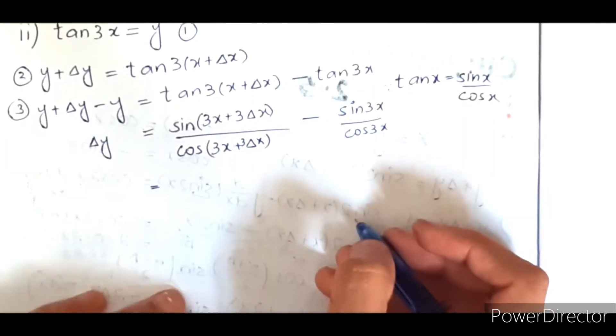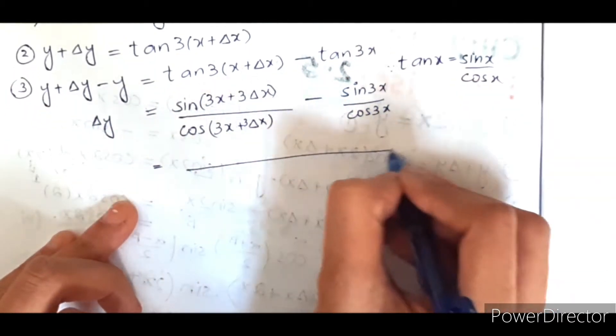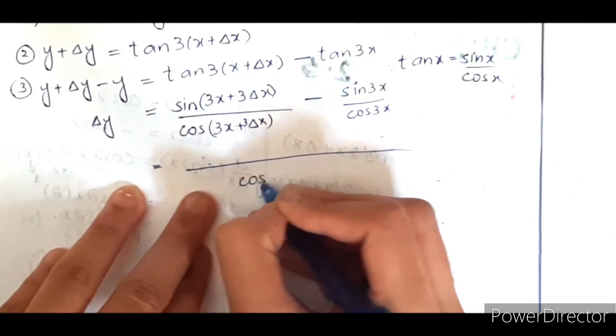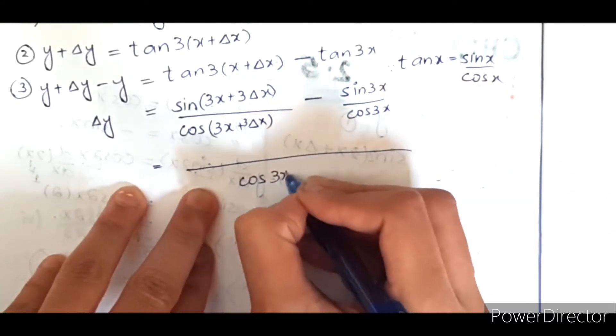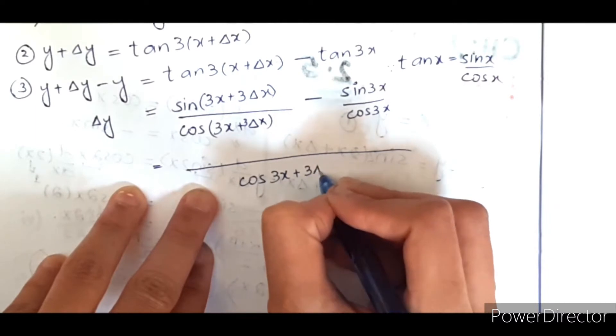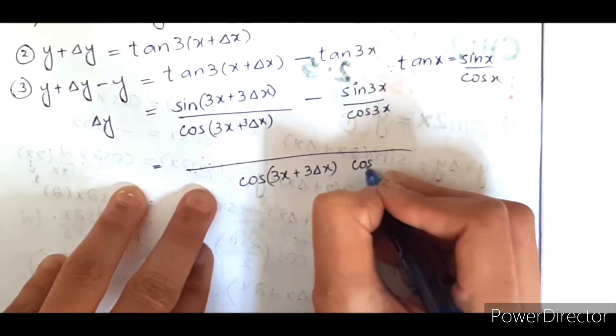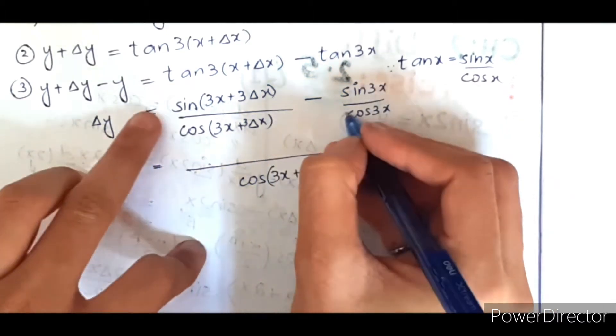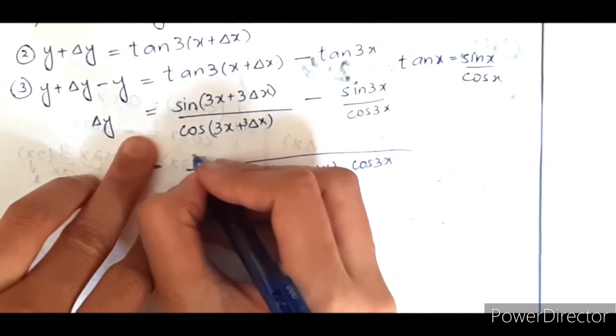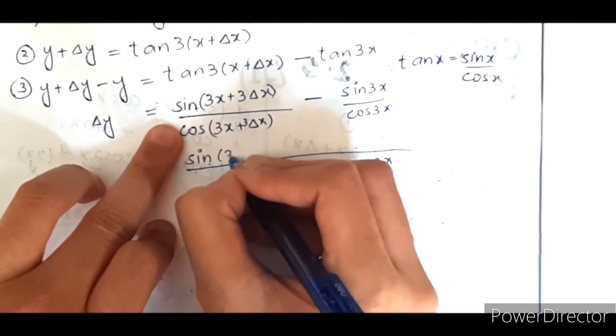Now taking the LCM, we have cos 3x plus 3 del x times cos 3x.